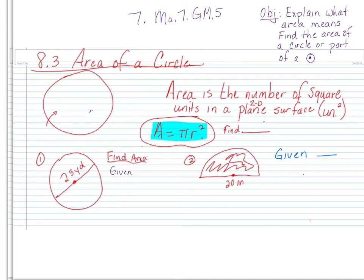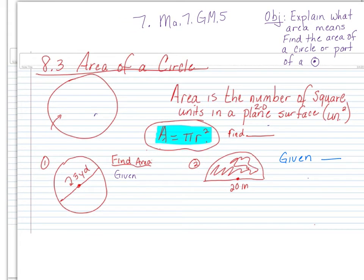Area is the number of square units in a 2D plane surface, right? In there. If you look at the reference sheet, the formula for area is pi r squared. So we need to have the radius. We need to have the radius.